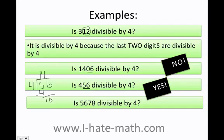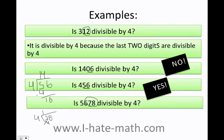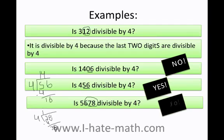Is 5,678 divisible by 4? Let's divide 78 by 4. I do the division and get a remainder — 7 minus 4 is 3, and I lower the 8, and there is no number that will fit evenly. Therefore the answer is no.